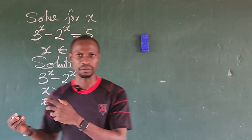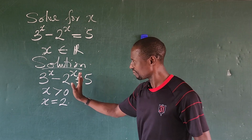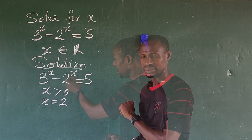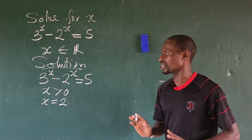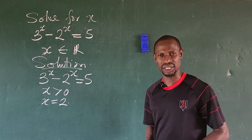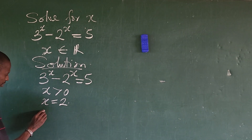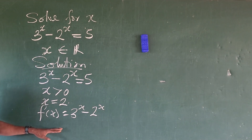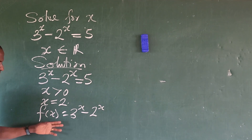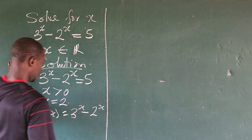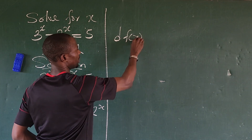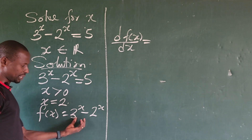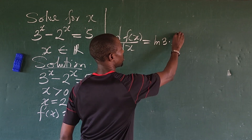Why is x = 2 the only solution for the real value of x? Looking at the left-hand side of this expression, it is a strictly increasing function. The variable in both terms is the same, which confirms this. We can prove it's strictly increasing by finding the derivative. So we have f(x) = 3 to the power of x minus 2 to the power of x. Let's differentiate — we'll move to this side for more space. Differentiating, we apply the law of differentiation.